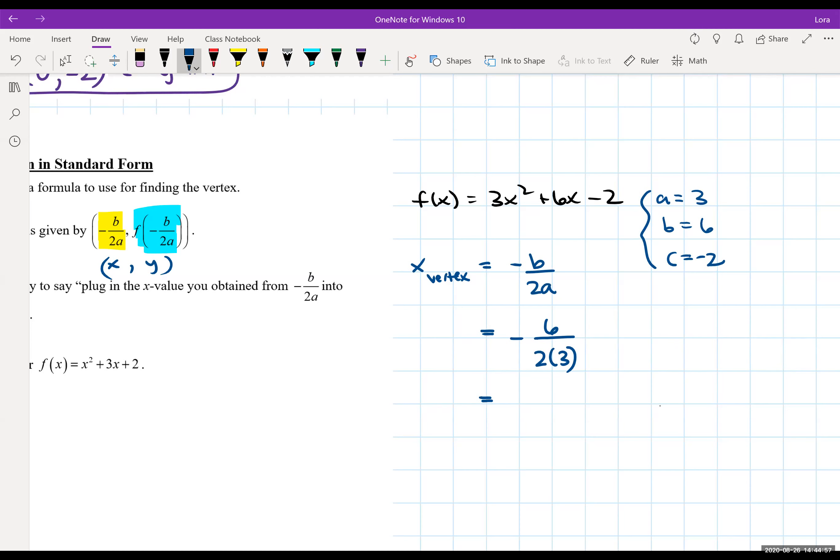the value. So we do have negative 6 over all 2 times 3 is 6. 6 over 6 is negative 1. So we do have the x value of the vertex.